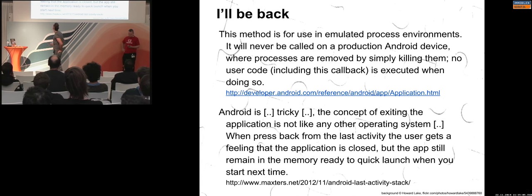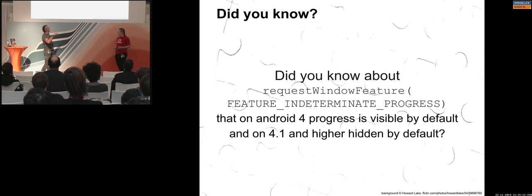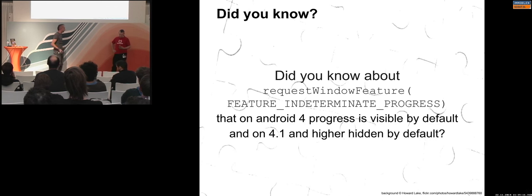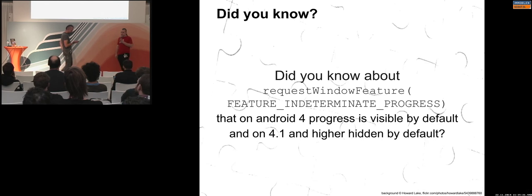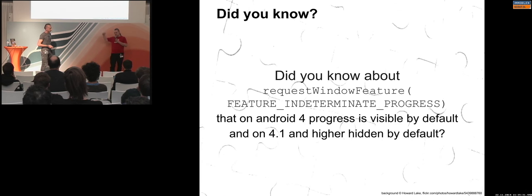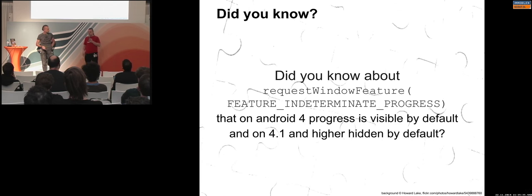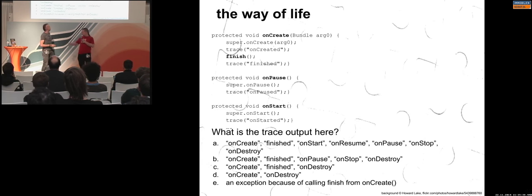Android is tricky. Please learn how the whole thing works. This is not a puzzle — it's an intermediate slide to tell you things we didn't put in puzzles but you might want to know. Regarding the request feature for the progress bar: in Ice Cream Sandwich, it was visible by default so as soon as you requested it you had a little spinner. After ICS, starting with Jelly Bean, it's hidden by default, which is much nicer.